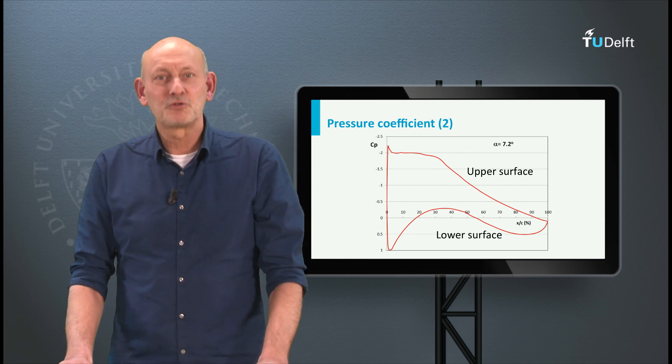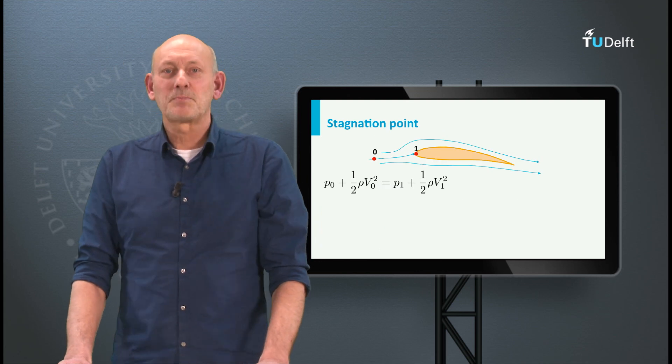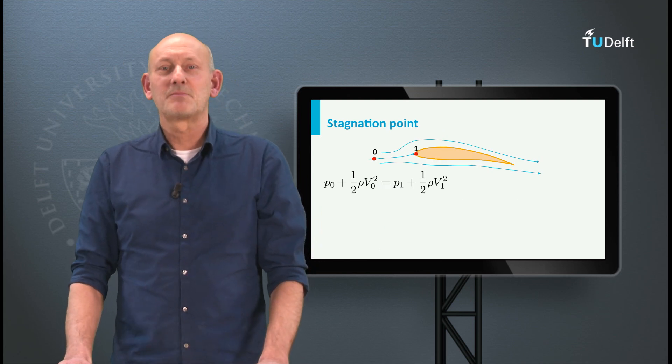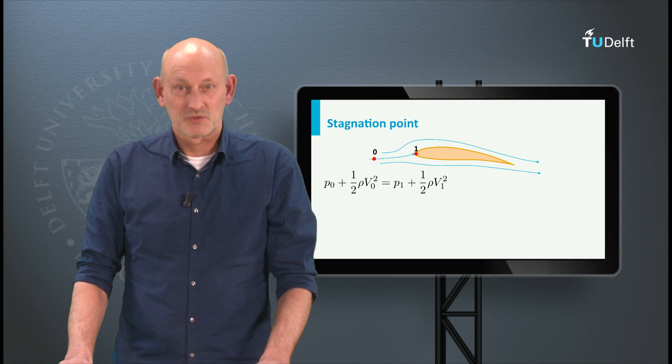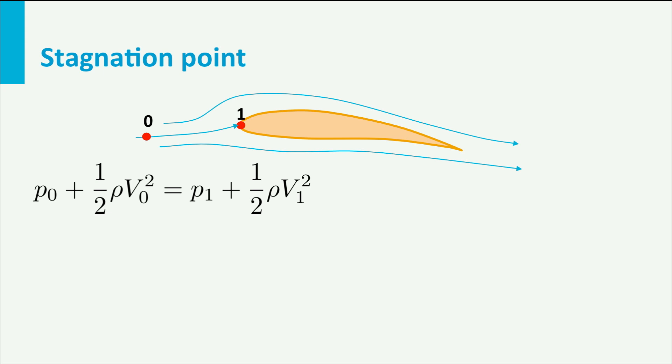Now let's get back to the flow over the airfoil. There are streamlines that pass over the upper surface and streamlines that pass over the lower surface. There is one streamline, the dividing streamline that stops at the airfoil leading edge. This is called the stagnation point. At this point the velocity is zero.